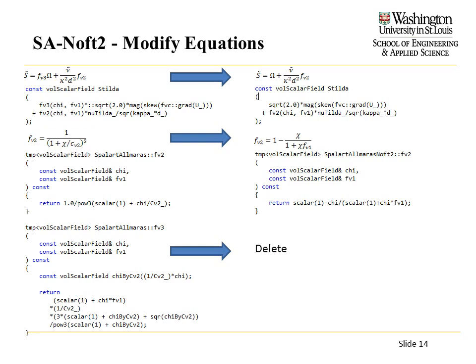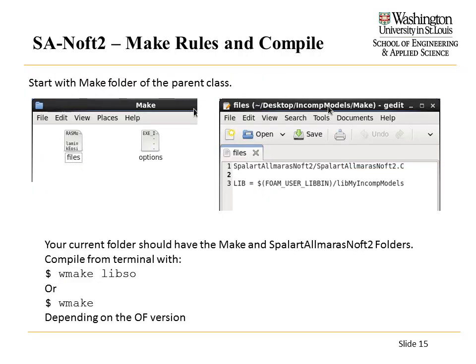Now we can go through and make the actual modifications to the model. First, get rid of the fv3 function — we don't need it anymore. Then there are just two minor changes to the fv2 equations. Before, it's easy to read: we had 1 divided by a quantity cubed, and we're changing it to 1 minus that quantity, where chi and fv1 were defined earlier and have the same definition in both models. It's a very simple modification. We also make the same sort of modification further down — get rid of the fv3 term and make a few simple changes. Now the model has the correct equations and correct names, and we're ready to compile it.